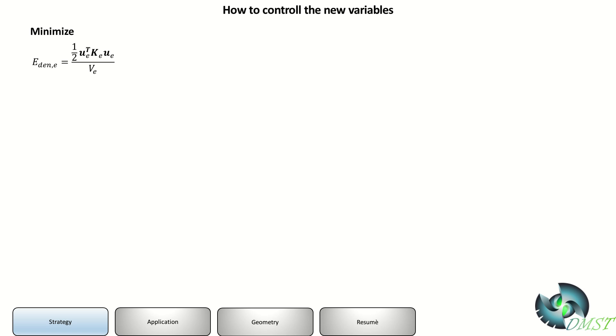Now we want to know how can we control the new variables. What we want is to minimize the strain energy. We see on the left the equation for the strain energy divided by the volume of the element. This is the strain energy density, and this is the equation what we want to minimize.